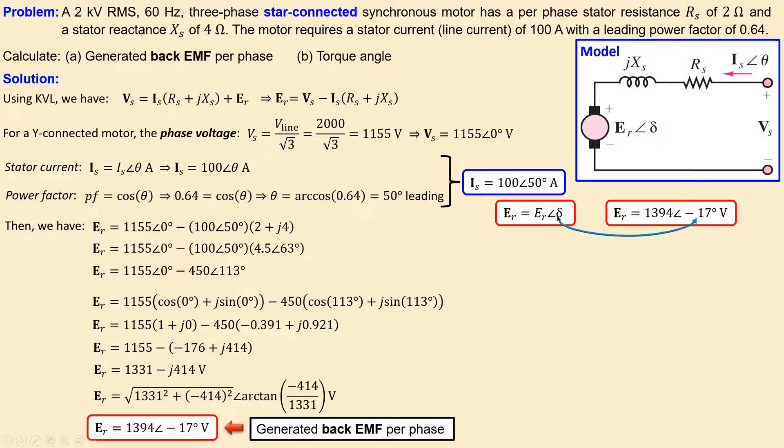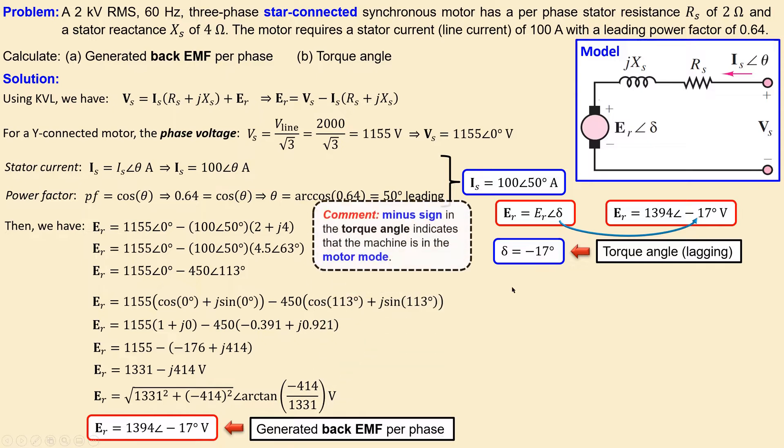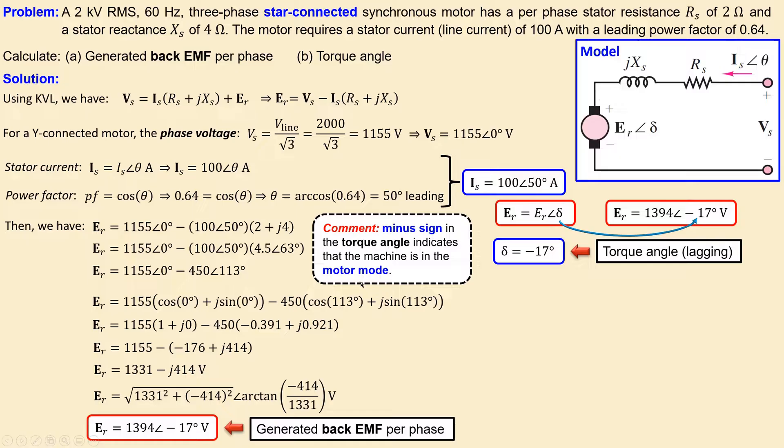That's what is shown here—the torque angle is minus 17 degrees and it's lagging because of the minus sign. The minus sign in the torque angle indicates the machine is in motor mode.